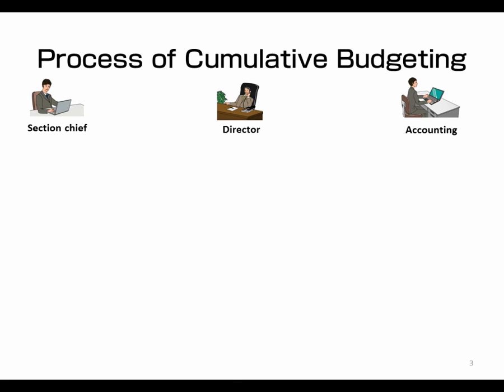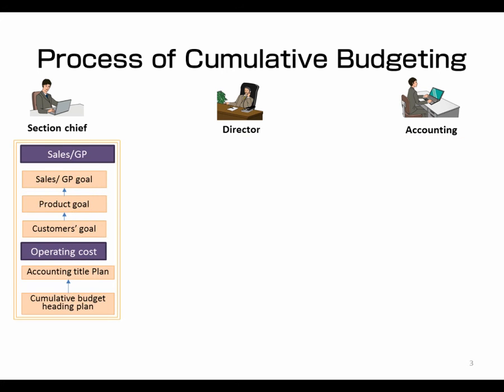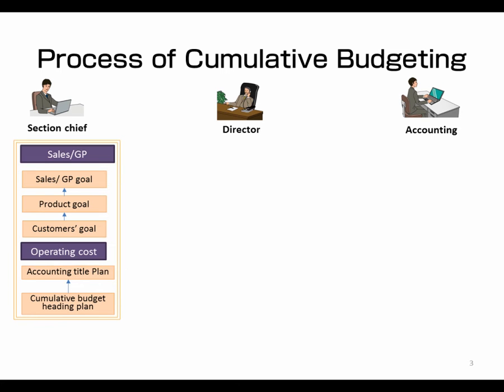Reporting will be handled jointly by the manager, the director, and the accounting department. First, the manager uses an incremental method to prepare a budget from sales to contribution margin. Since the incremental approaches to sales and gross profit are different from that of operating expense, two patterns are prepared.